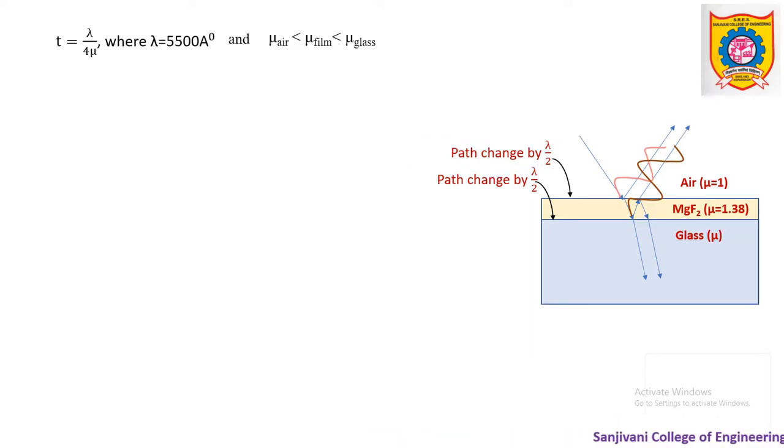Let us see the mathematical part behind it. The question is, though we say that the thickness of the film is lambda upon 4 mu, but how does it come out to be this? As already I have stated, the wavelength for which these anti-reflection thin films are designed is 5500 angstrom. The question is regarding thickness. Refractive index is between air and glass.